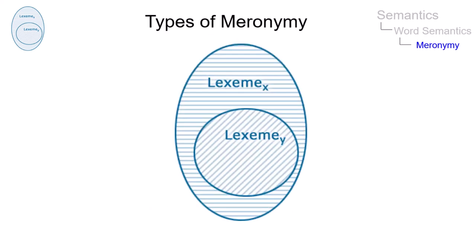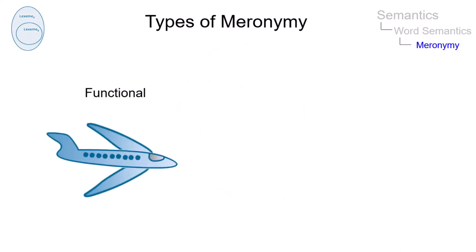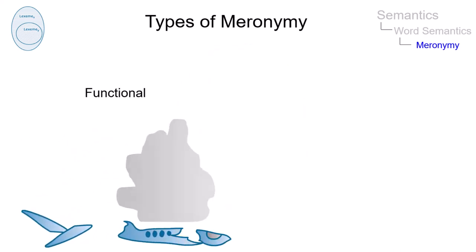There are two types of meronymy. Functional meronymy, that is, the parts are detachable from the whole, sometimes with strange effects though.